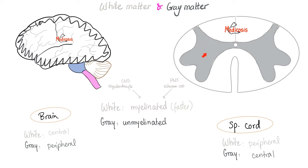We all know the H-shape — it's easy to remember the spinal cord. The H is on the inside, so white matter is on the outside. The brain is the other way around. The significance: myelin appears white and unmyelinated fibers appear gray. In the spinal cord, the white outer part is myelinated — thank your oligodendrocytes, since you're talking about the CNS. In the brain, same thing — oligodendrocytes. For a peripheral nerve, it's the Schwann cell.